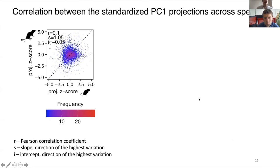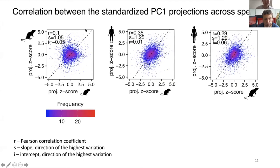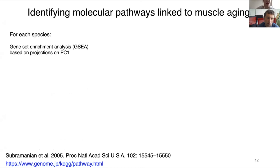Next, I wanted to compare the dynamics of gene expression changes occurring during muscle aging. I correlated projection z-scores calculated individually for each gene pairwise. The correlation was very poor for all comparisons, indicating that muscle aging is not conserved at the gene level across species.